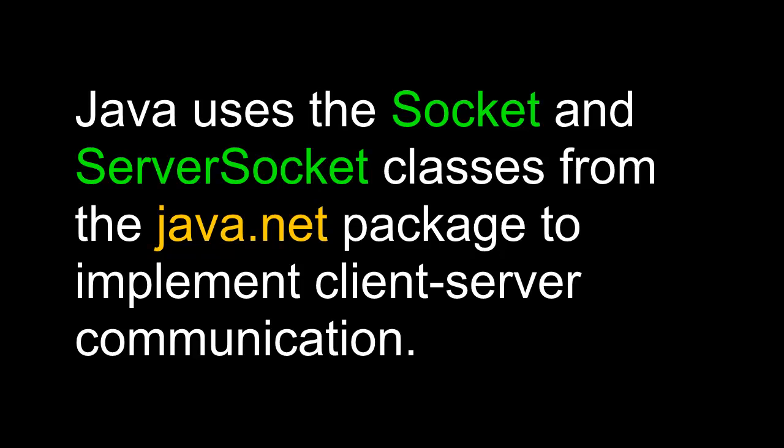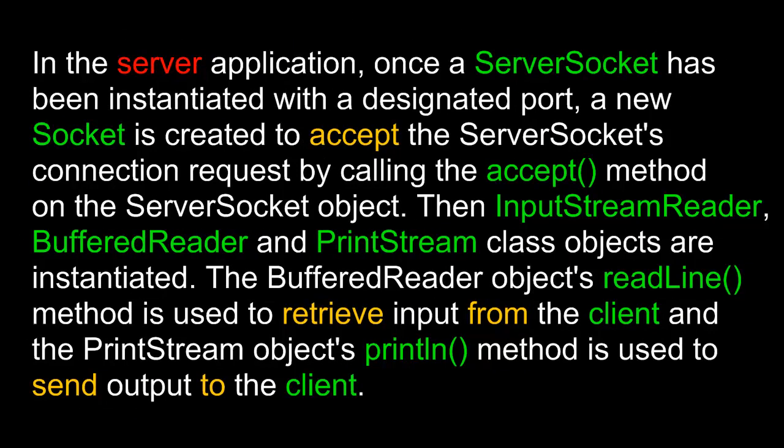Java uses the Socket and ServerSocket classes from the java.net package to implement client-server communication. In the server application, once a ServerSocket has been instantiated with the designated port, a new socket is created to accept the connection request by calling the accept method on the ServerSocket object. Then, InputStreamReader, BufferedReader, and PrintStream class objects are instantiated. The BufferedReader object's readLine method retrieves input from the client, and the PrintStream object's println method sends output to the client.